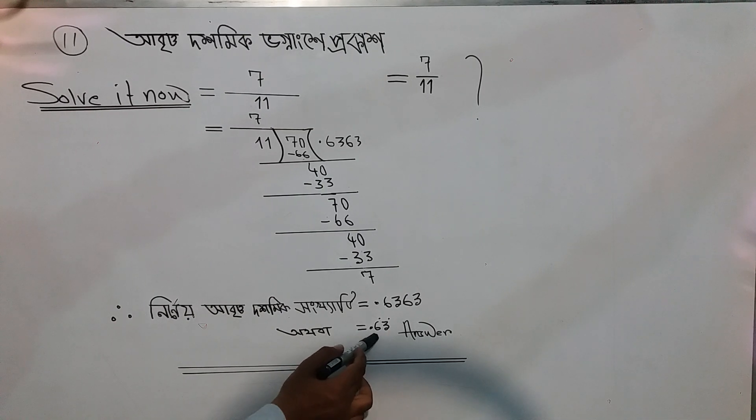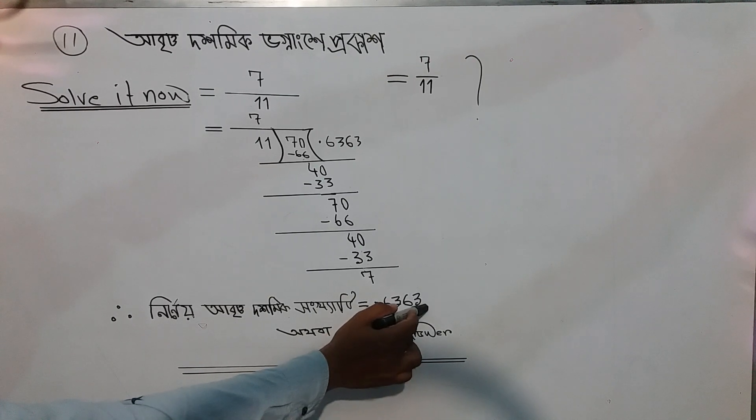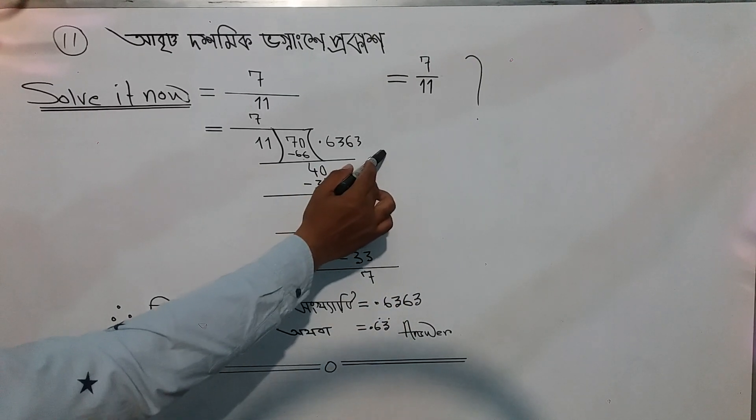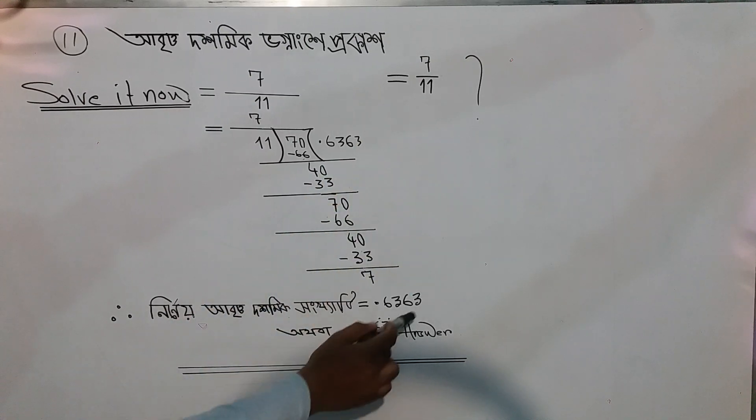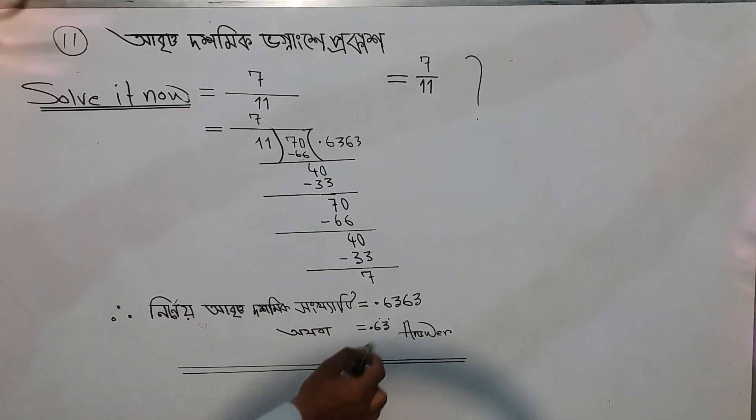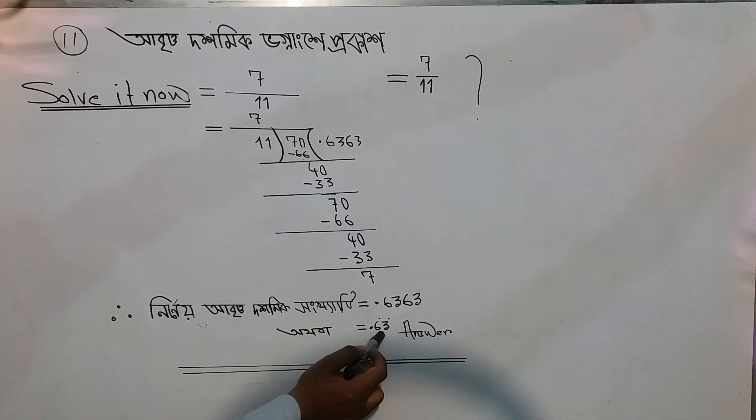If we write it as a recurring decimal, it's point six three, repeating. The decimal has six recurring, then three recurring - the four digits repeat. Or we can say six three keeps repeating. We can see that sixty-three appears repeatedly.